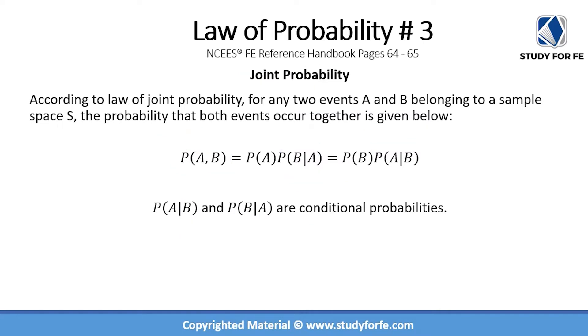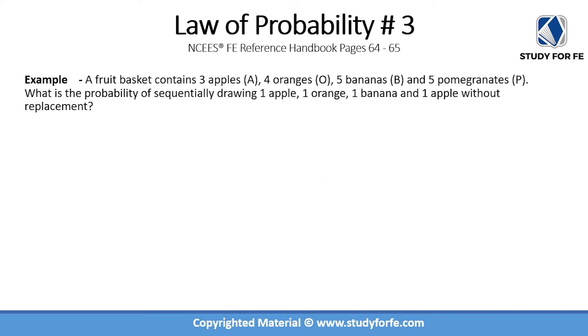The law of joint probability is pretty simple and straightforward. You're just multiplying the probability of one event times the probability of the other event given that the first event has already occurred. These two equations can be used interchangeably and they mean basically the same thing.